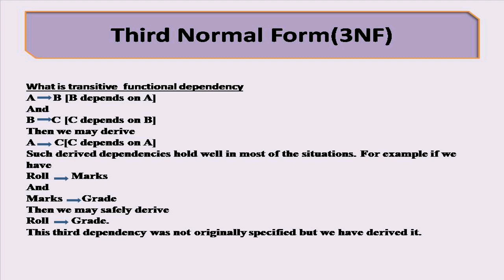A gives B and B gives C, then we may derive A gives C. Such derived dependencies hold in most situations. For example, Roll gives Marks and Marks gives Grade, then we may derive Roll gives Grade. This third dependency was not originally specified, but we have derived it.